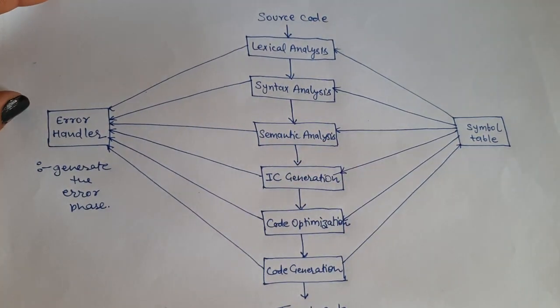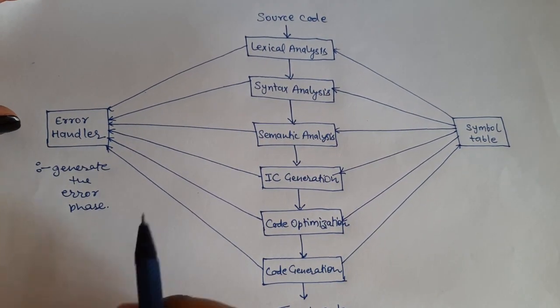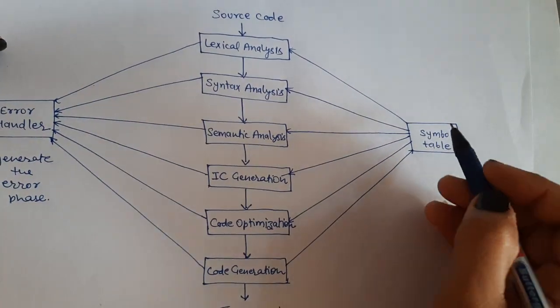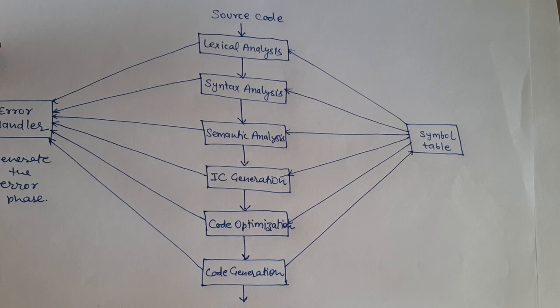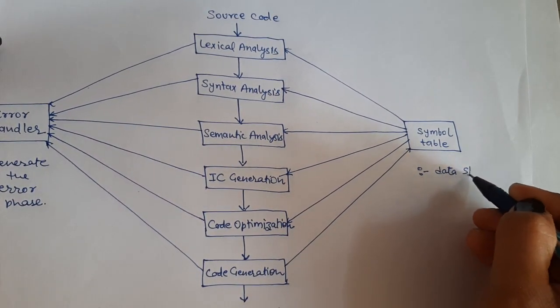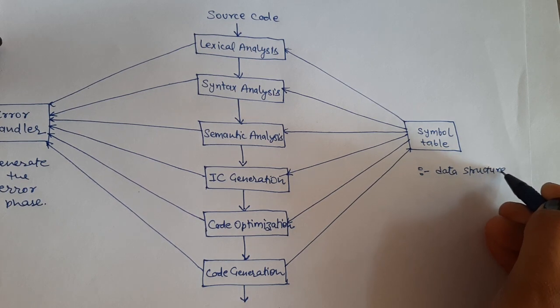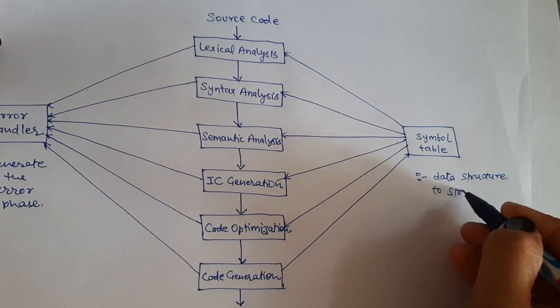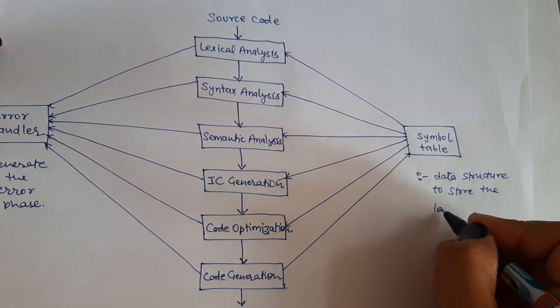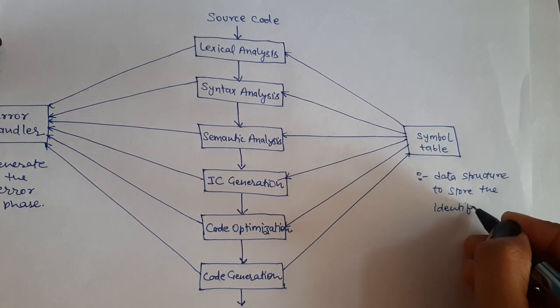Similarly, the symbol table is connected to all the phases. What is the symbol table? This is a data structure which we use to store the identifiers and their values.